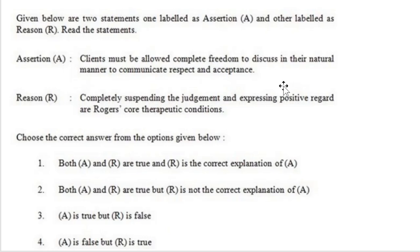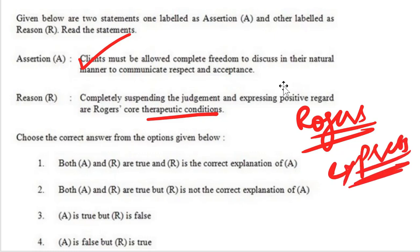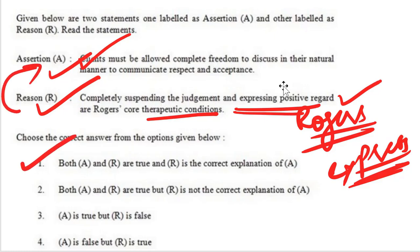Given below are two statements, one labeled as assertion and one as reason. Assertion: the client must be allowed complete freedom to discuss in their natural manner to communicate respect and acceptance — this is correct. Reason: completely suspending judgment and expressing positive regard is Rogers' core therapeutic condition. Rogers' theory states that you suspend judgment and express unconditional positive regard. So A and R are both correct, and R is the correct explanation of A. Statement 1 is correct.